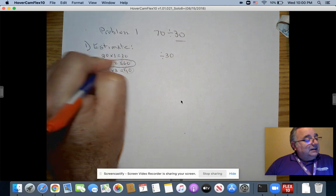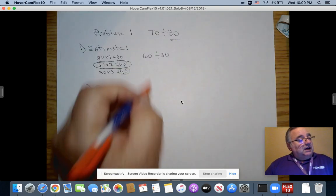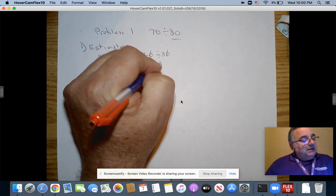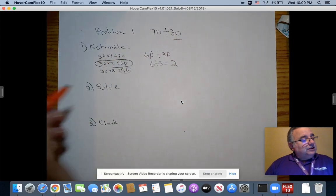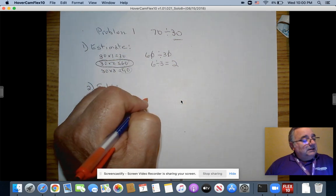I always take the one that's less because I know that that will be part of the answer. So I'm going to look at here, 2. My divisor is going to become 60. I can divide by 10. This gives me 6 divided by 3. And the answer is 2. That's going to help me solve it.